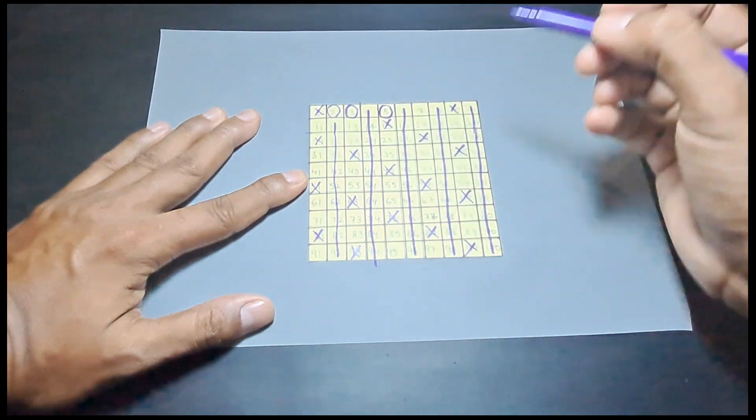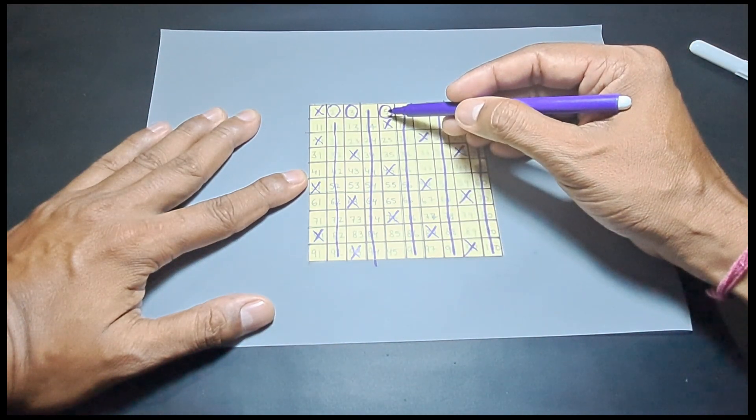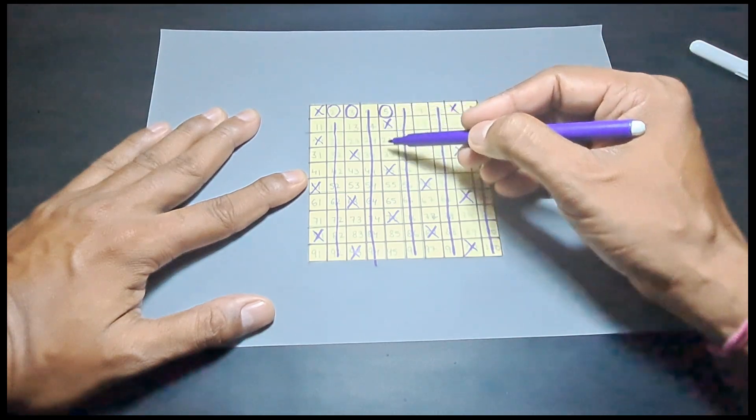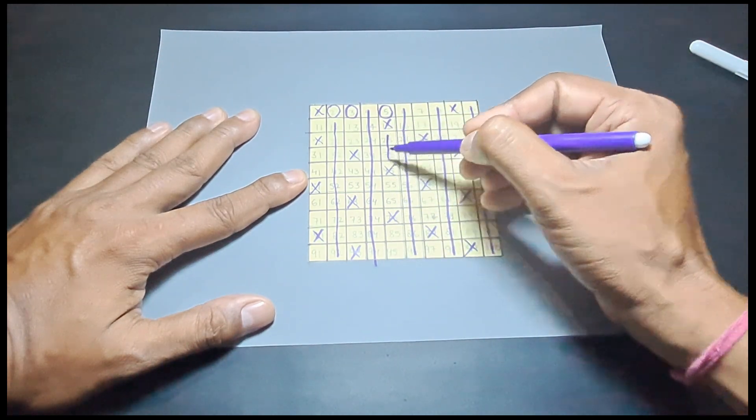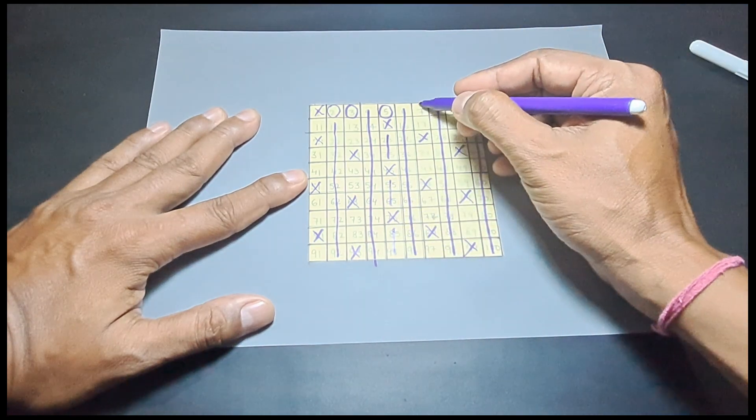Similarly, do it for 5. 5 is a prime number, so I do not need the multiples of 5. All the multiples of 5 ending in 0 have already been cancelled, so you have only this row. This row is also cancelled now because they are multiples of 5 and they are not prime.